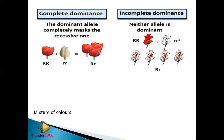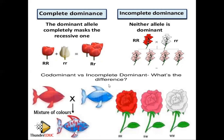In incomplete dominance, each parent contributes 50% and an intermediate color is formed. In co-dominance, crossing red and blue produces a mixture of red and blue — red is completely dominant and blue is also completely dominant, both expressed in the phenotype of the offspring. In incomplete dominance you produce a new intermediate color; in co-dominance both parent colors are expressed together in the phenotype.